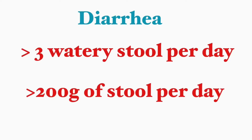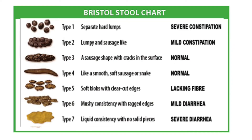Diarrhea is classified as having more than three watery stools per day, or it can be more than 200 grams of stool per day — though I really don't think anybody measures their stool at home. So we'll work with greater than three watery stools per day, and it can be acute, meaning lasting less than two weeks, or chronic, meaning lasting more than 30 days.